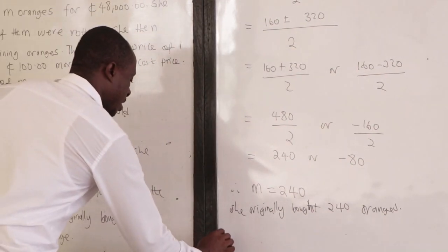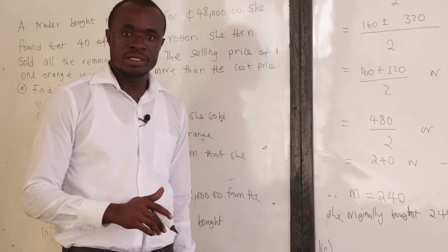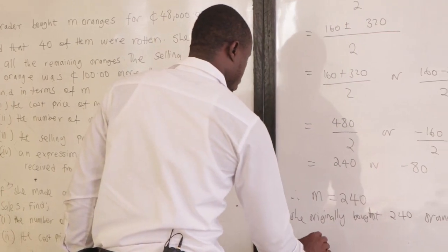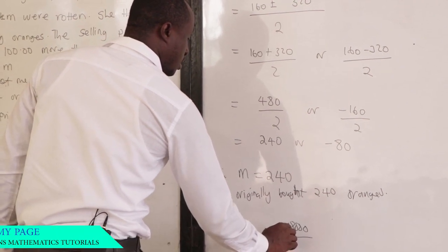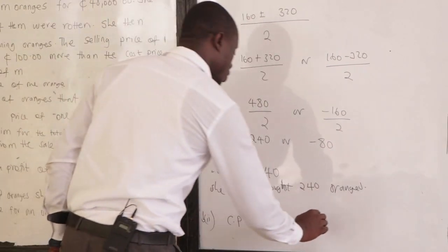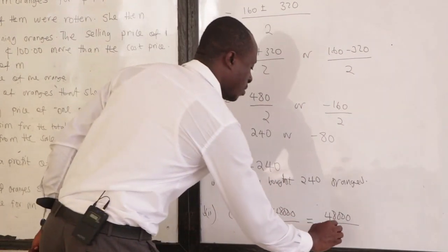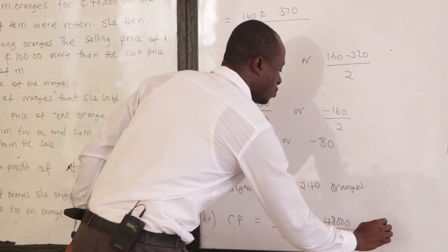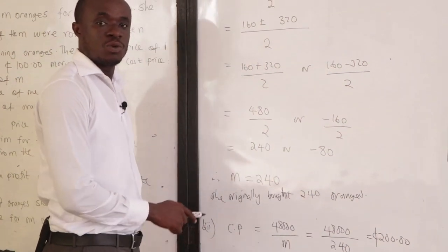For part B(ii), we find the cost price for one orange. The cost price for one orange is 48,000 divided by M. Since M is 240, this equals 48,000 divided by 240, which gives 200. So the cost price for one orange is 200 CDs.